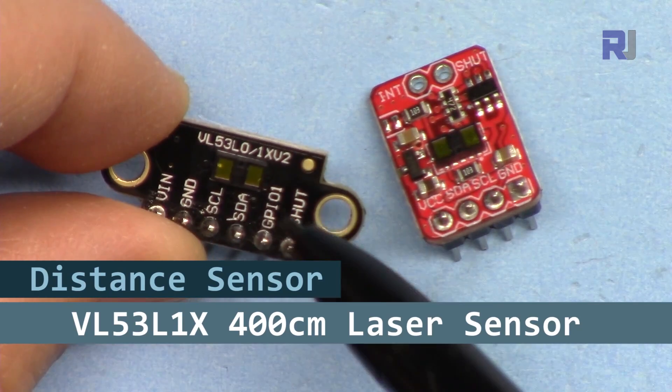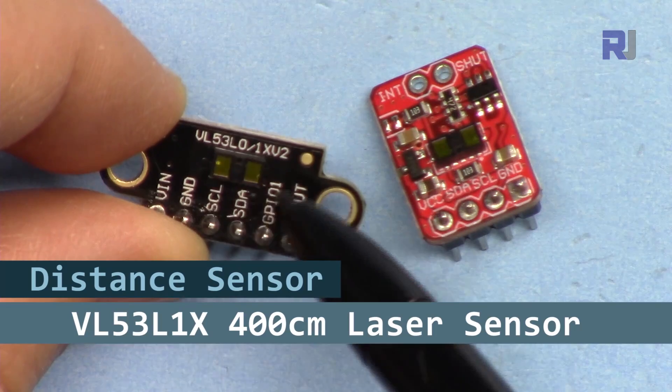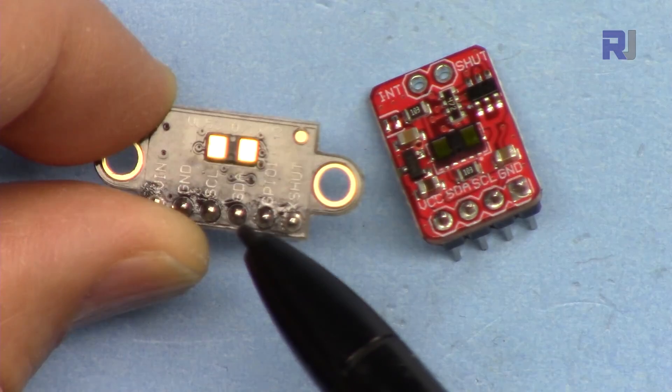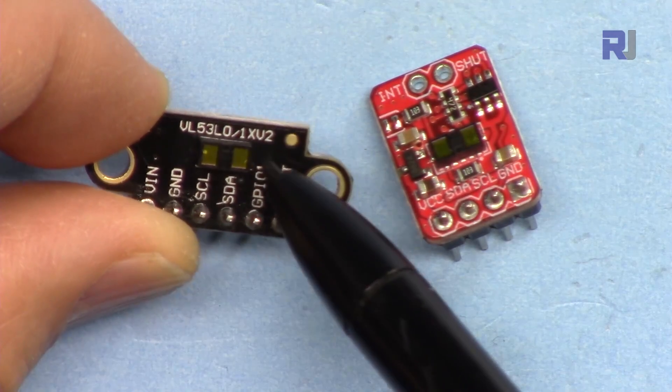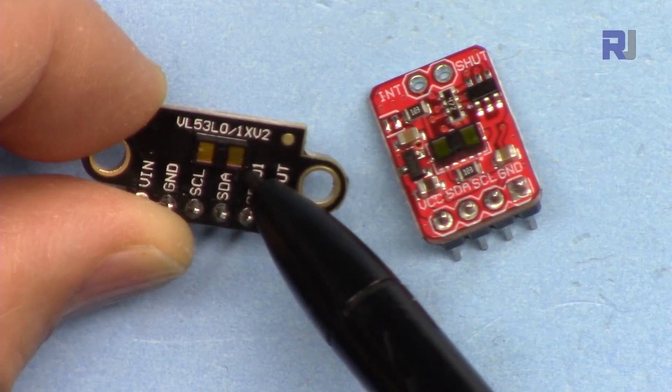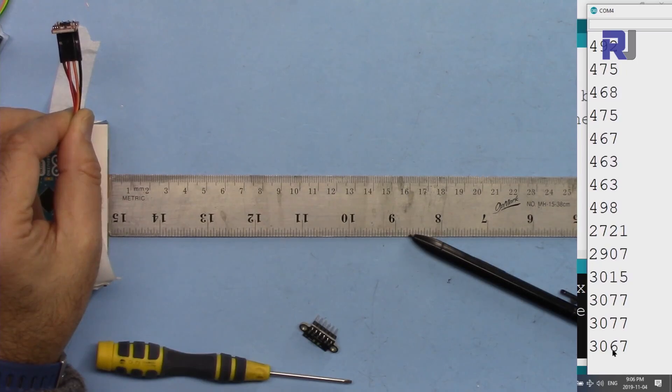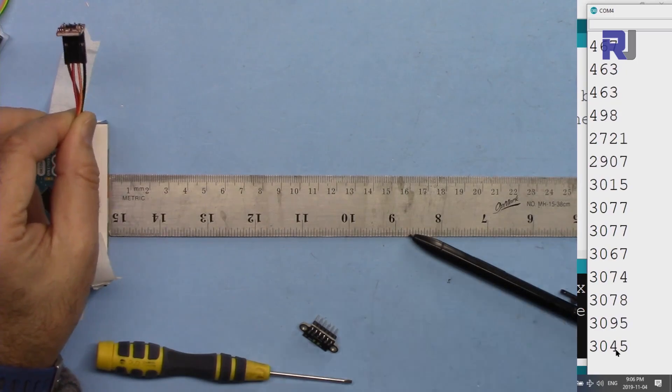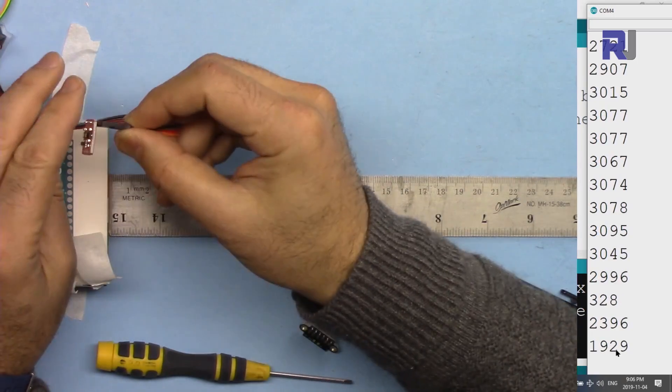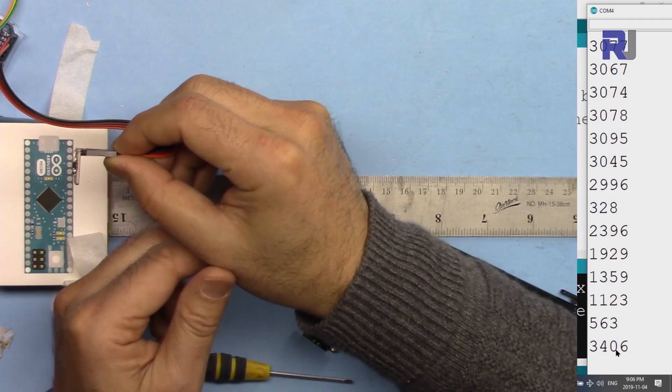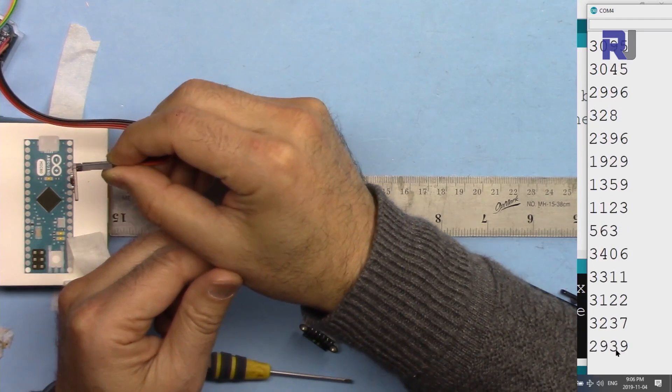In this tutorial we are going to learn and test this VL53L1X time of flight laser sensor with range of four meters. This module is offered in this shape and we are reading three meters. Let me point it to further away on the wall.